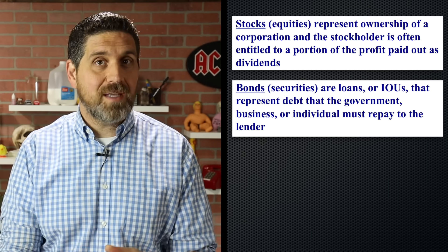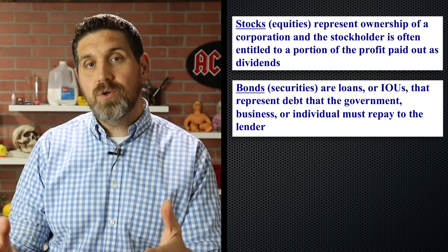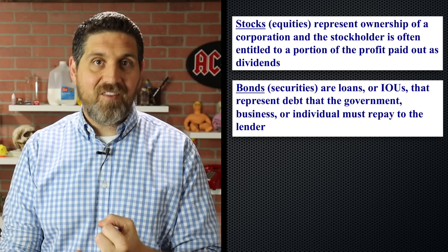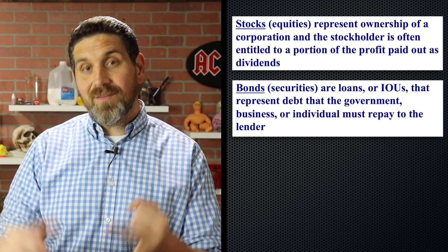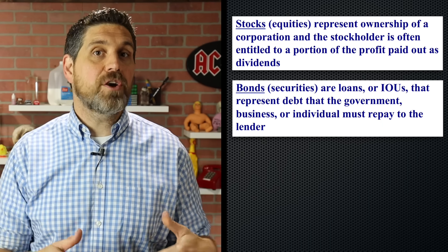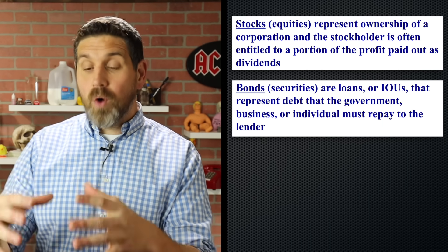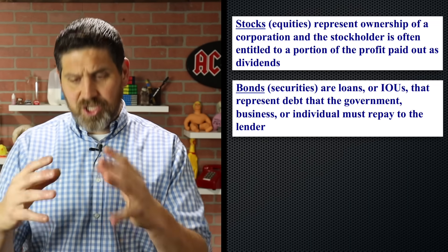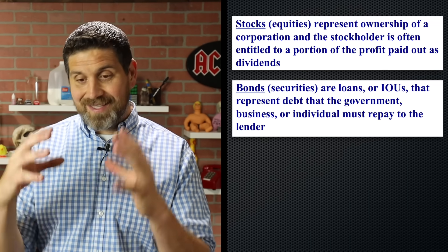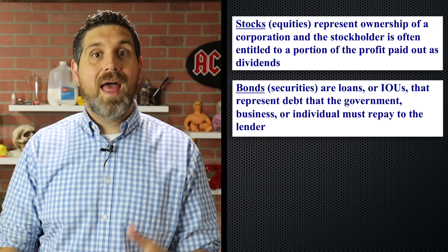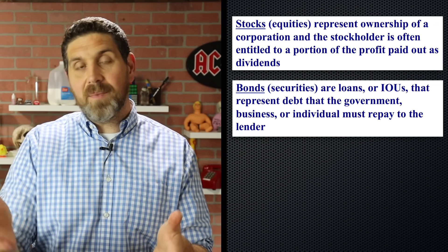Bonds are also called securities, and they're just IOUs issued by corporations and the government. They usually give you less risk and less returns than stocks. Unlike stocks, when you own a bond, you don't own any of the company — you're just going to get paid back at a set interest rate. You're the lender, and the company or the government is the borrower. So when you buy a bond, you give them your money and they agree to pay you a predetermined interest rate in the future.